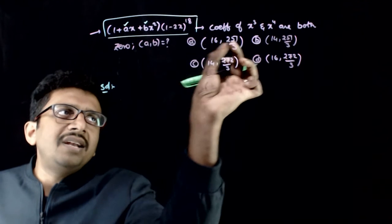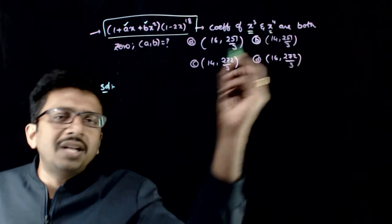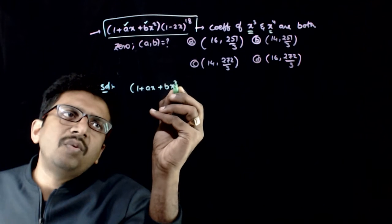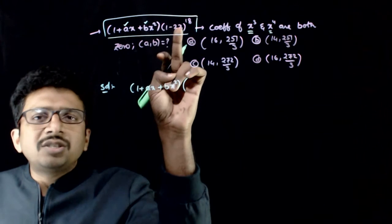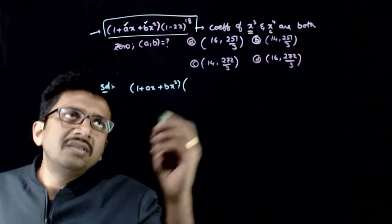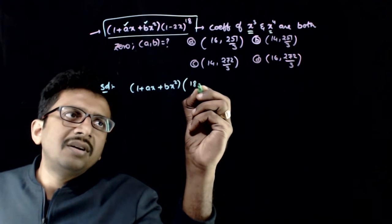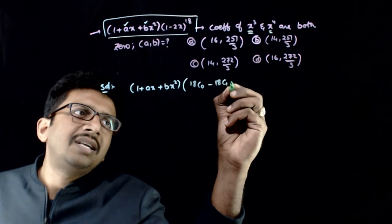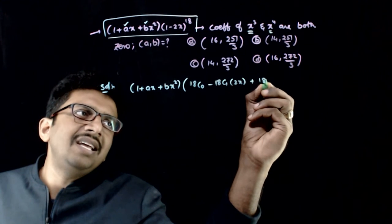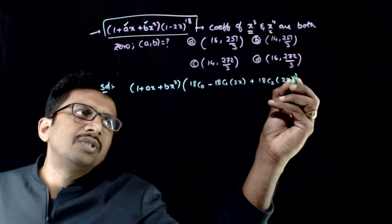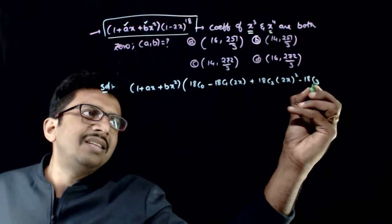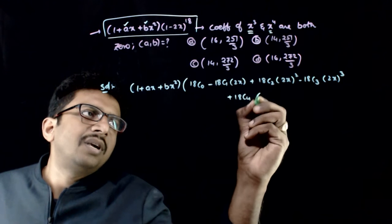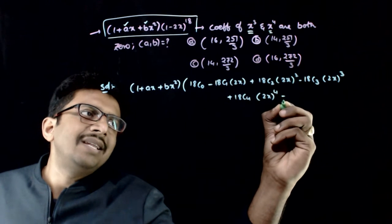First, let us find the individual coefficients — the x³ coefficient and the x⁴ coefficient. We have (1 + ax + bx²) times (1 - 2x)^18. The binomial expansion of (1 - 2x)^18 is: 18C0 minus 18C1·(2x) plus 18C2·(2x)² minus 18C3·(2x)³ plus 18C4·(2x)⁴ and so on.